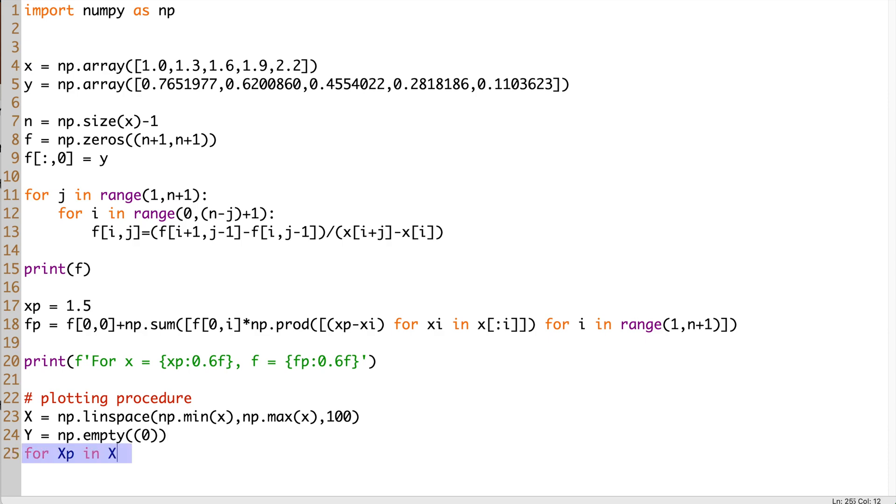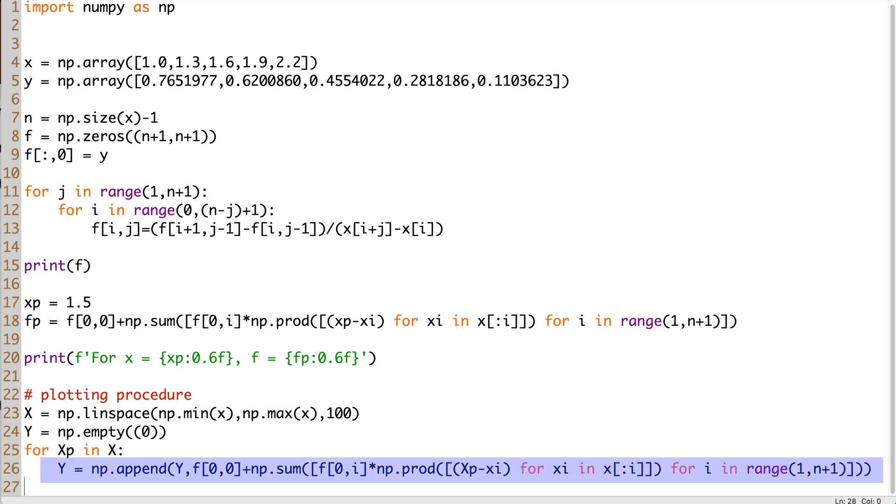Now, we loop through all new points of x capital array and apply the interpolation polynomial to find the y array. Each calculated value is appended to the y array. So, by the end of the loop, the array will contain all y elements corresponding to the x capital elements. Now, we are ready to plot the polynomial.